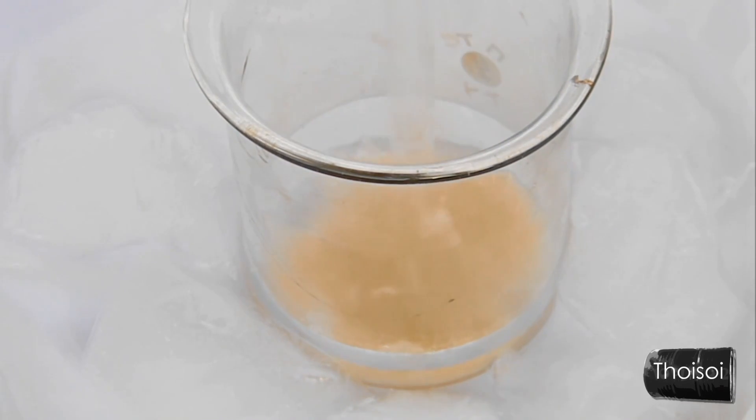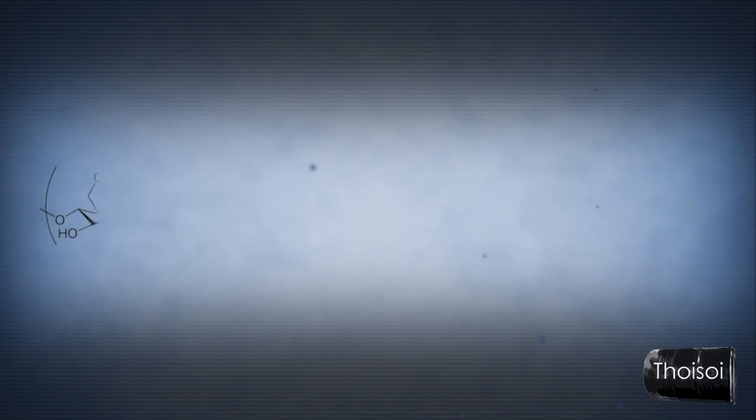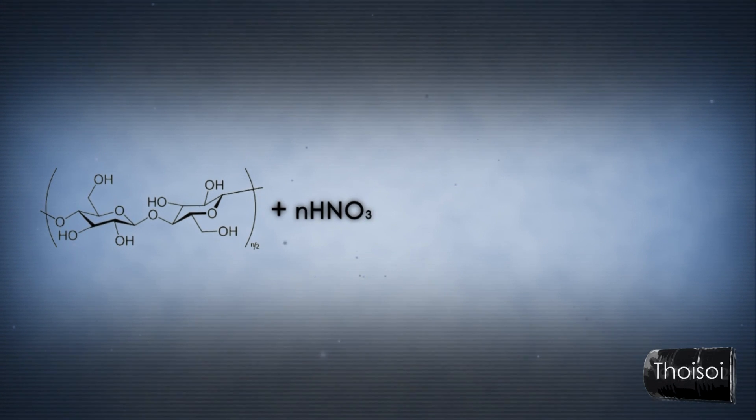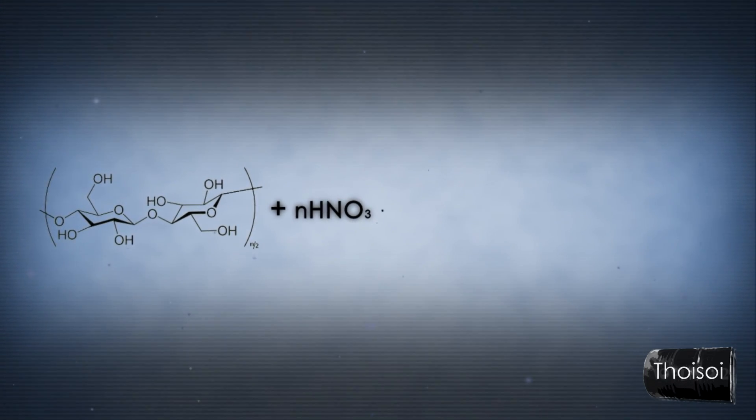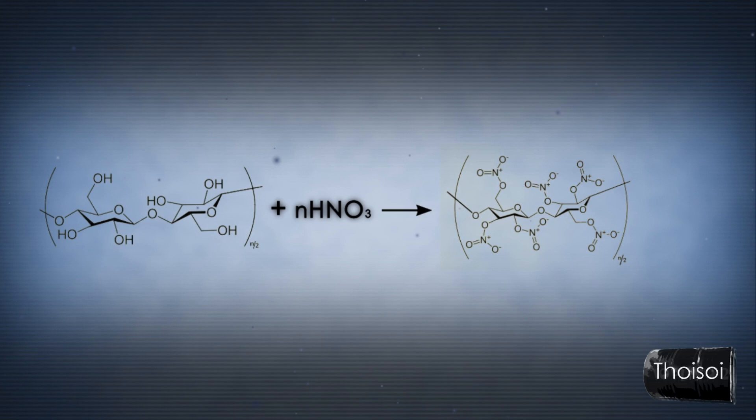What happens within this reaction? The cellulose consists of many interconnected glucose molecules. Each glucose molecule contains some hydroxyl groups. After the reaction of cellulose with concentrated nitric acid, nitric acid replaces the hydrogen atoms of hydroxyl groups with the nitro groups.